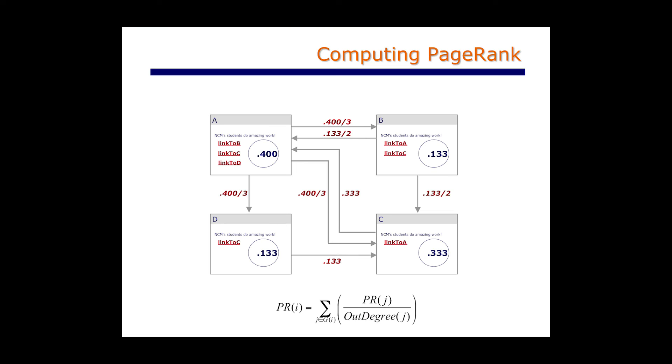...and confirm that if we start with these values — two-fifths for A, two-fifteenths for B and D, and one-third for C — you divide up the page rank among the pages that a particular page points to, and then sum up the page rank flowing into a page, you will end up with these values again: two-fifths, two-fifteenths, two-fifteenths, and one-third.